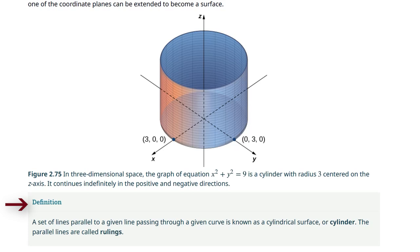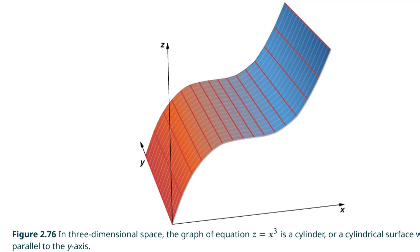By definition, the set of lines parallel to a given line passing through a given curve is known as a cylindrical surface or a cylinder. The parallel lines are called rulings. From this definition, we still have a cylinder in three-dimensional space even if the curve isn't a circle — any curve can form a cylinder. In this figure, the graph of z = x³ is a cylinder, and the rulings are parallel to the y-axis. Notice we do not have y in the equation z = x³.